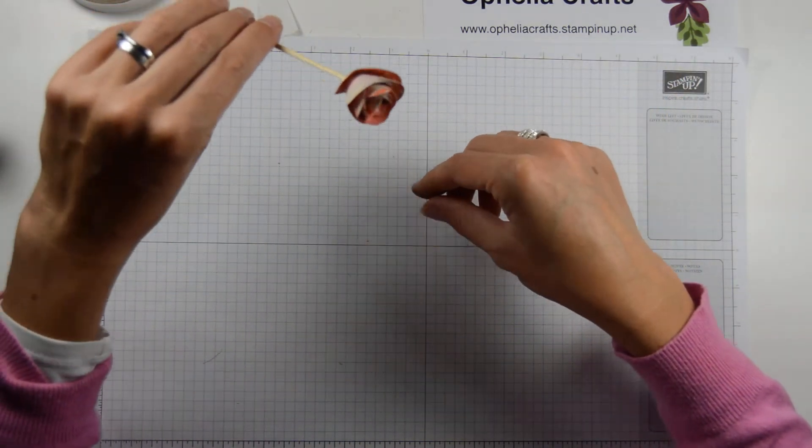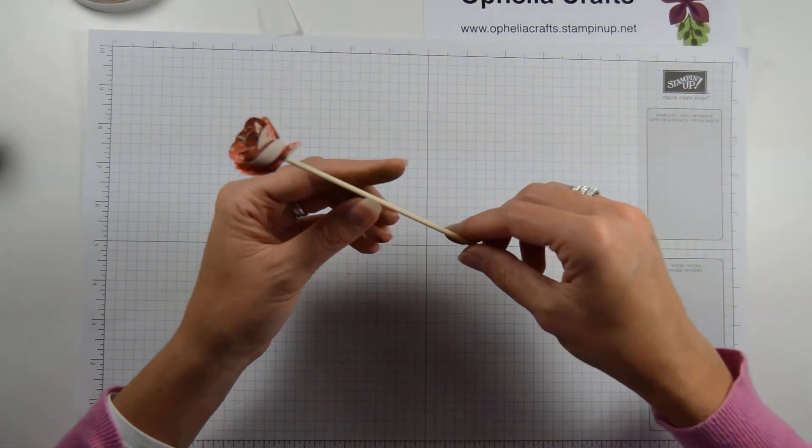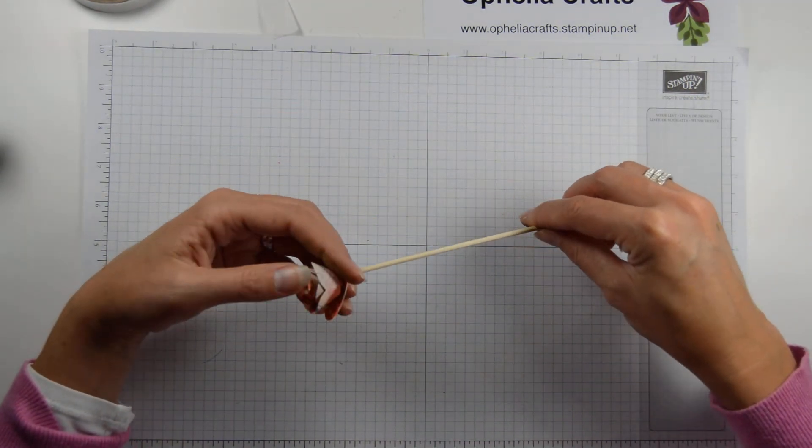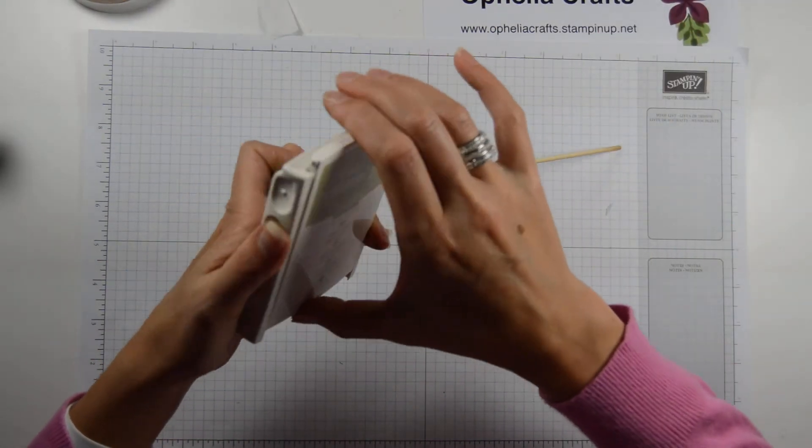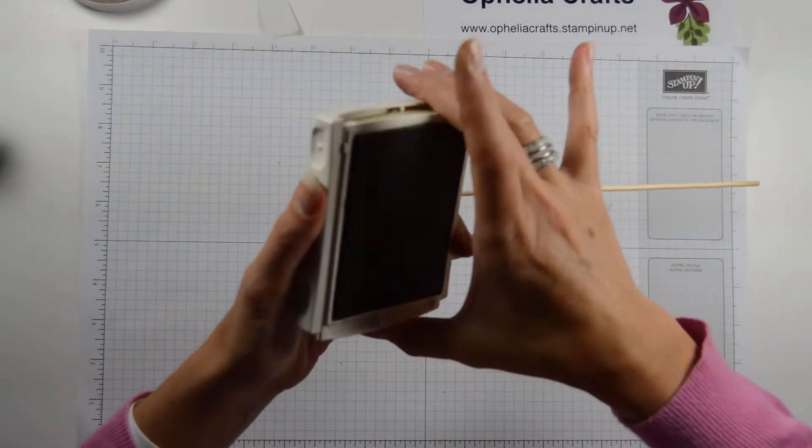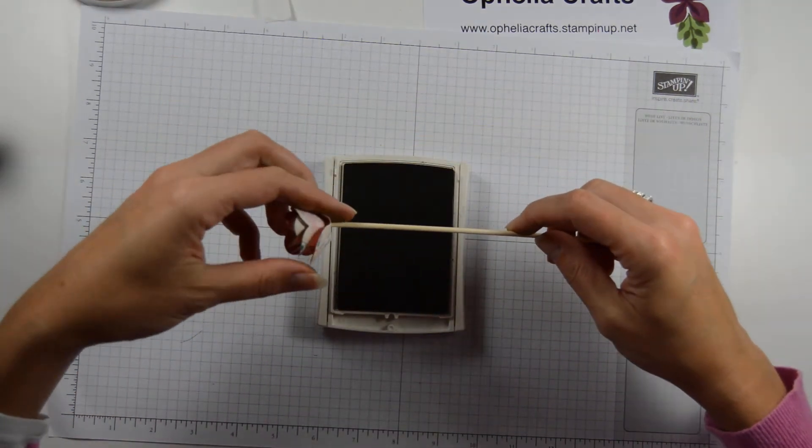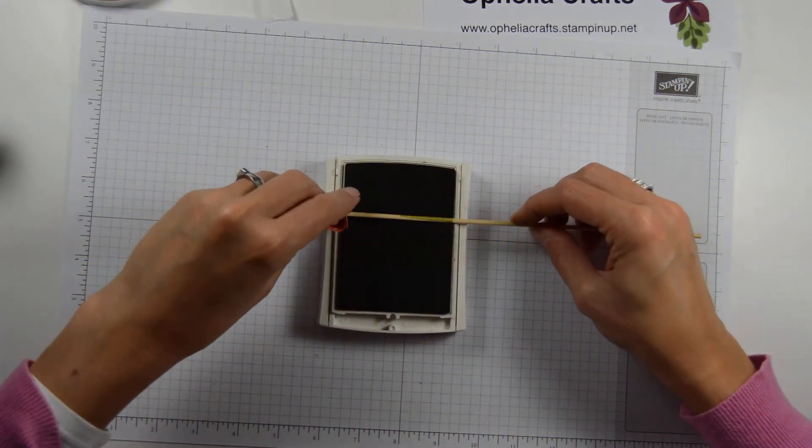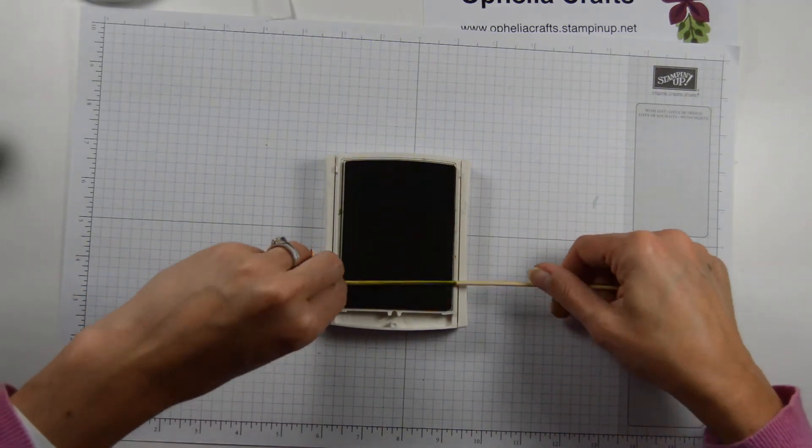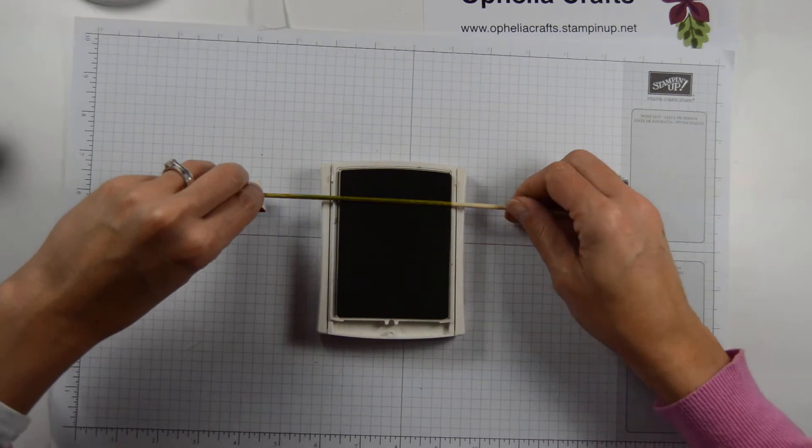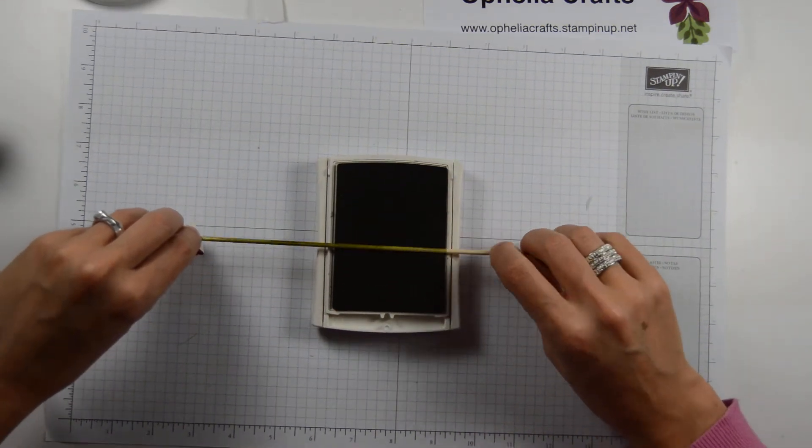Then what I did, I took my rose, held it like this, got my ink pad, and rolled the stick through the ink so that it makes a green stalk. Of course you need green.